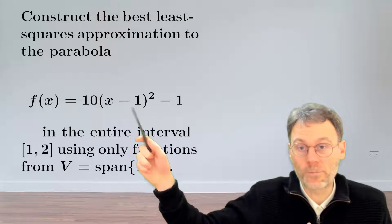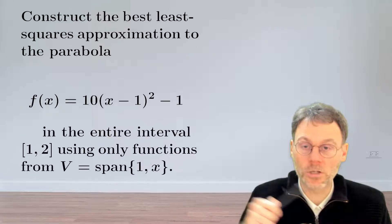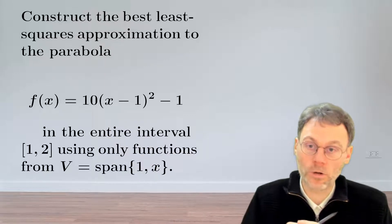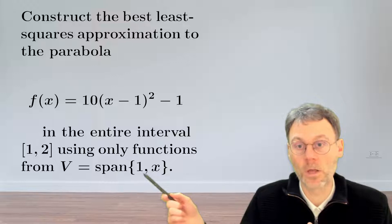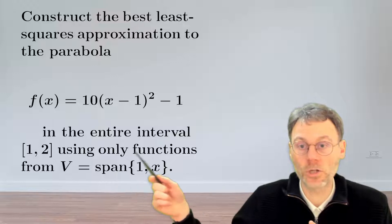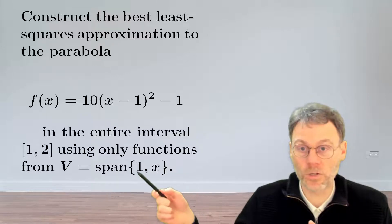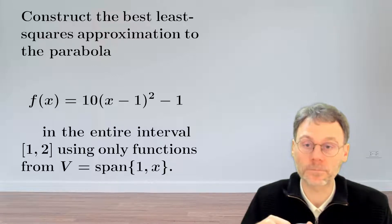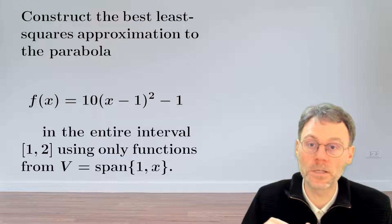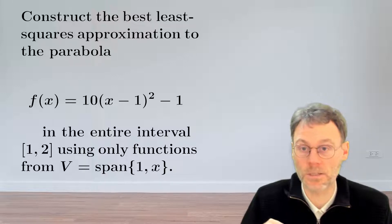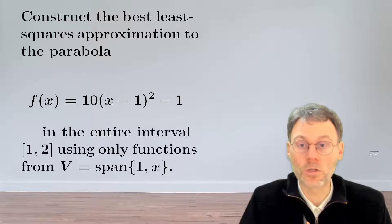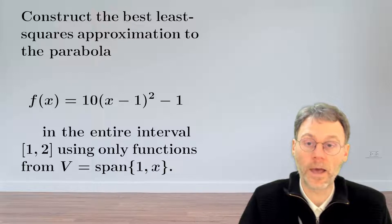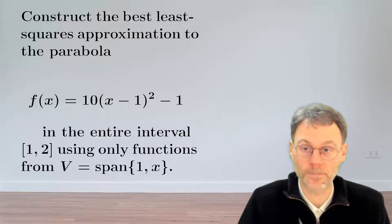This is a friendly parabola. The question is: can you approximate that parabola using only linear functions, so using a combination of basis functions 1 and x, and do that approximation in the least-squares sense in the interval from 1 to 2? Pause the video and think how you would tackle this.